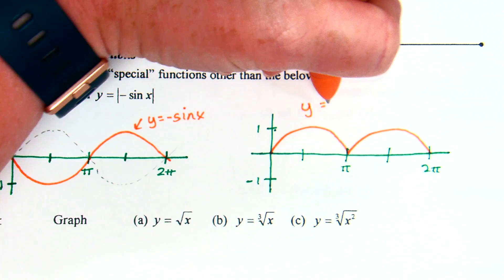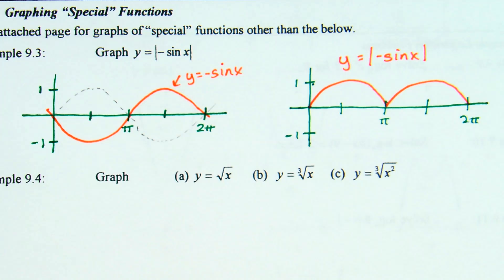Could you graph it on your calculator and get it to work out? You could, but there's something to be said for understanding what the negative does — it reflects. What does the absolute value do? It makes it positive. That was a big thing in algebra too.